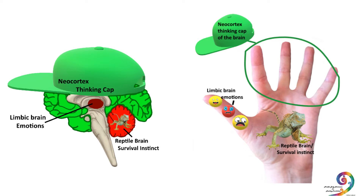The most ancient part of the human brain is the reptile brain. This is where our survival instinct is based, and this is closest to the brain stem. In the hand model of the brain, it's represented by the open palm.